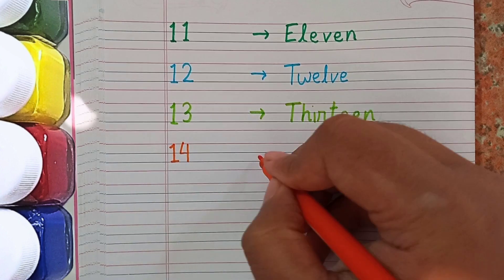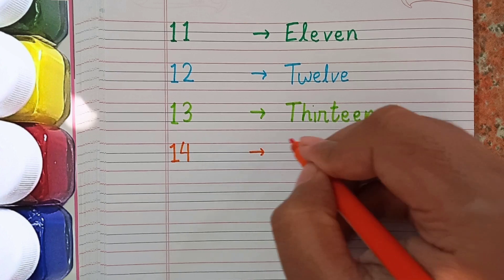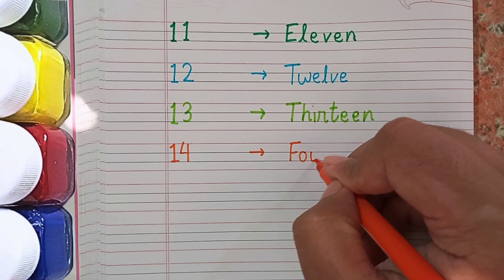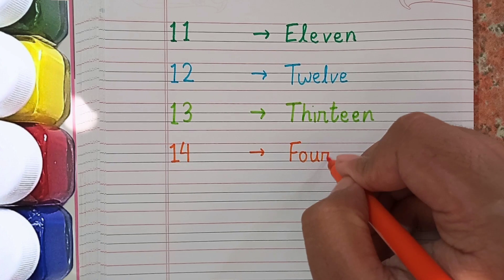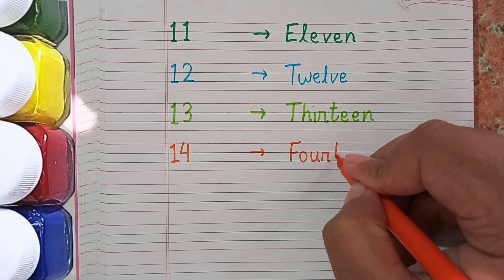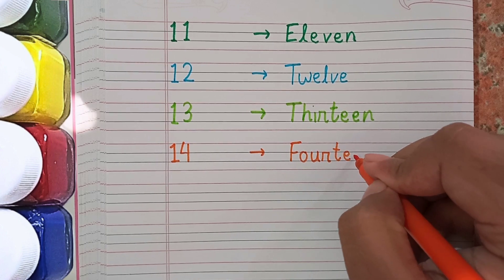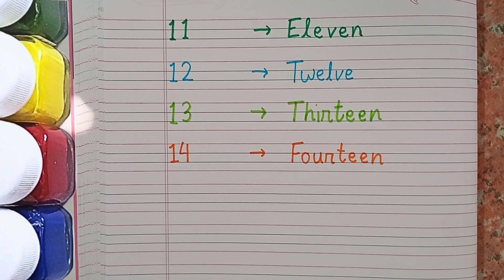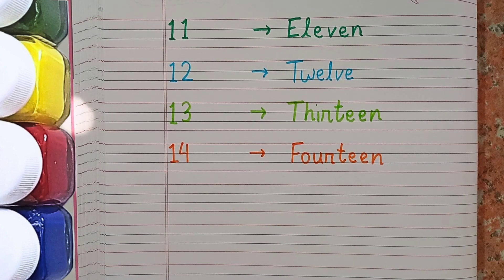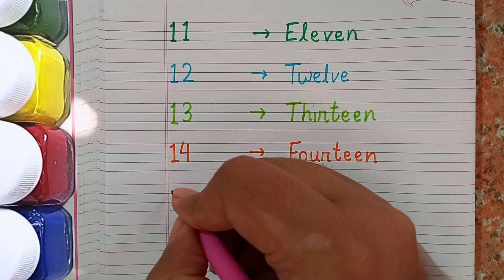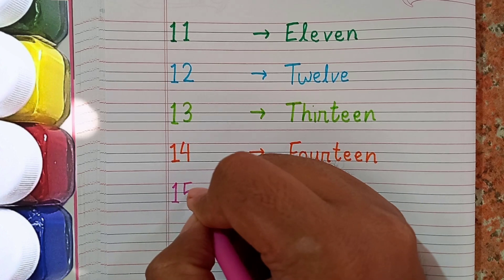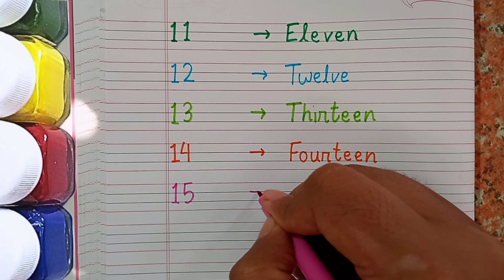After 13 the next number is 14 and the spelling of 14 is F-O-U-R-T-E-E-N. Remember the spelling: F-O-U-R-T-E-E-N. After 14 I am writing 15.